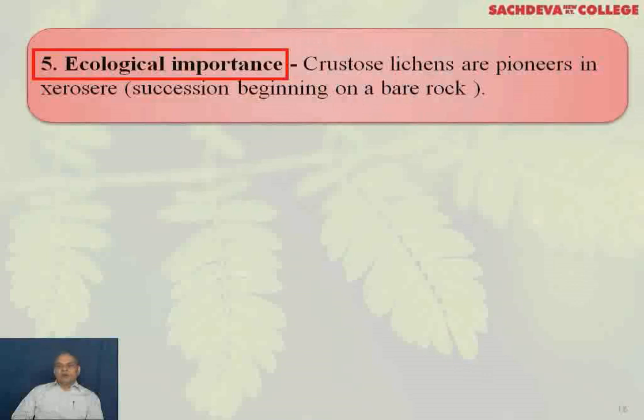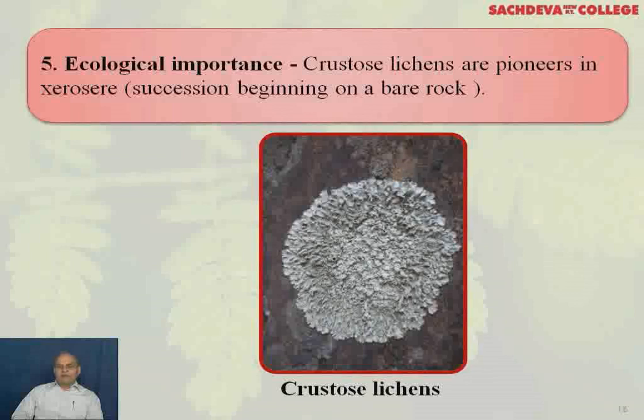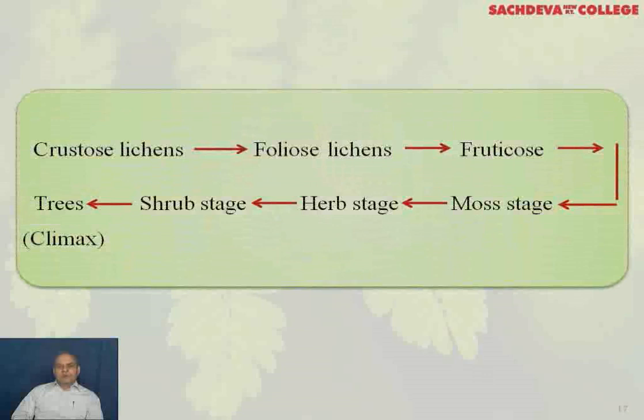Ecological importance: Crustose lichens are the pioneers in xerosere, that is the succession beginning on a bare rock. The first to appear on a bare rock is the crustose lichen, followed by foliose, then fruticose, then moss, then herbs, then shrubs, and finally trees. That is how succession on a bare rock starts, and it ends with the trees as the climax community.